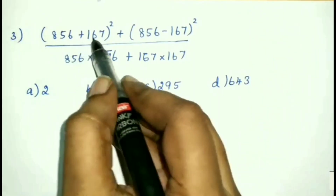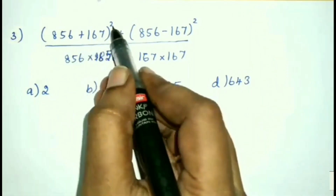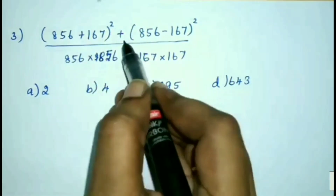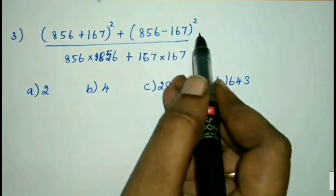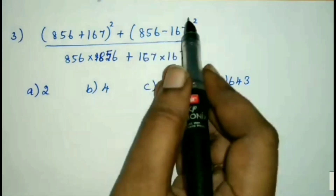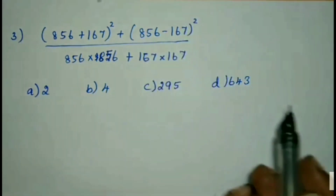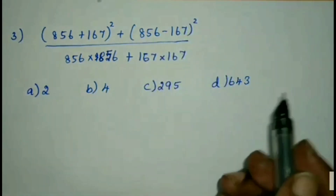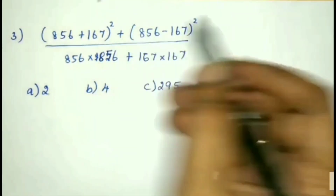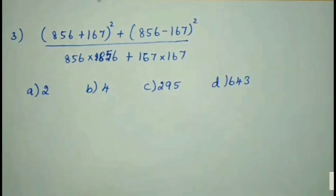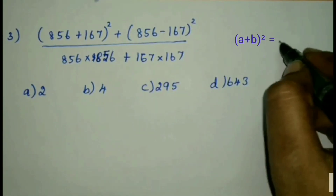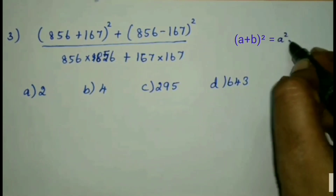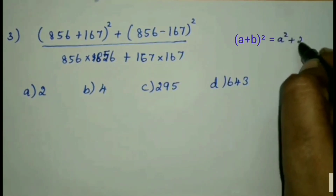We need to evaluate (856 + 167)² + (856 - 167)². We consider this as (a + b)² + (a - b)², where a = 856 and b = 167. We apply the standard algebraic identities for these two expressions.